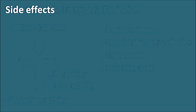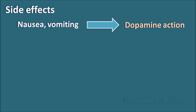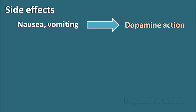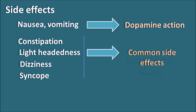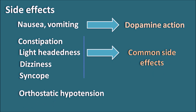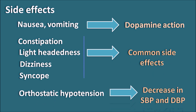Nausea and vomiting are important side effects of Bromocriptine; since it is a dopamine agonist, this side effect is observed with all drugs having dopamine action. Other side effects include constipation, lightheadedness, dizziness, and syncope. Bromocriptine can also produce orthostatic hypotension, reducing both systolic and diastolic blood pressure in patients.